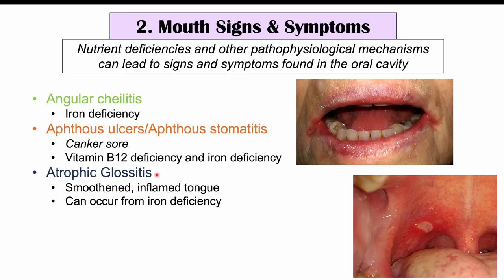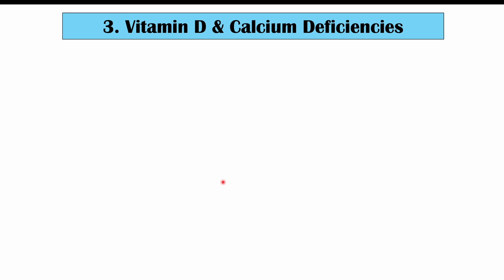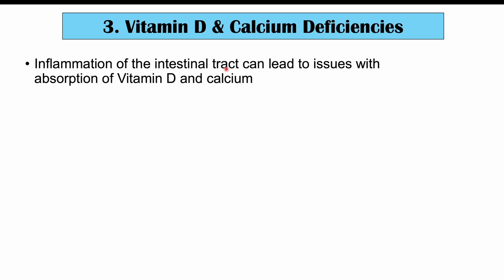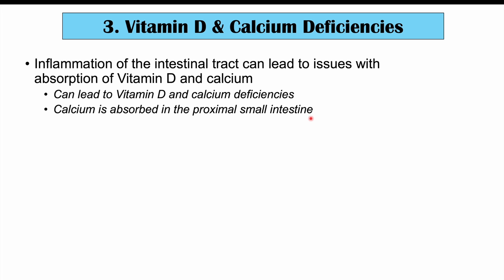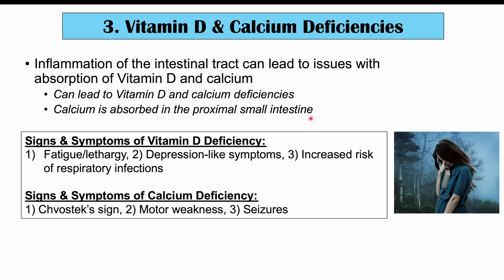The third group of atypical signs and symptoms in celiac disease stems from vitamin D and calcium deficiency. Inflammation of the intestinal tract from autoimmune destruction can impair absorption of vitamin D and calcium, both absorbed in the proximal small intestine. Vitamin D deficiency can lead to fatigue, lethargy, depression-like symptoms, and increased risk of respiratory infections.